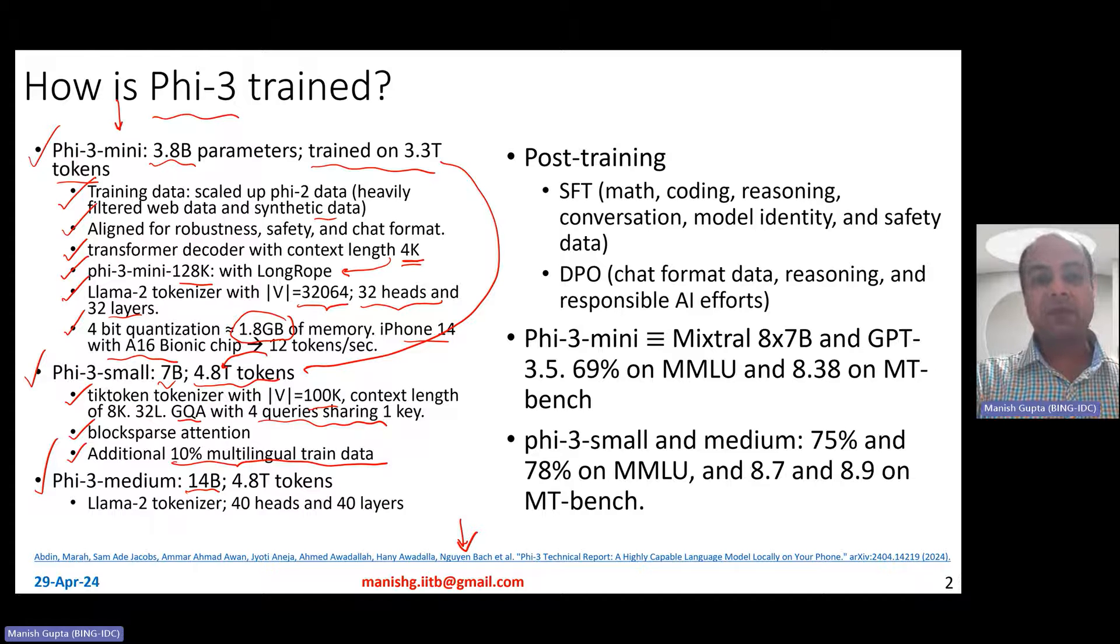Phi-3 medium is a 14 billion parameter model, trained with the same 4.8 trillion tokens, uses a Llama 2 tokenizer though with 40 heads and 40 layers.